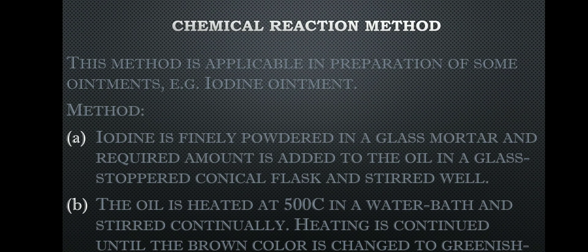Now the chemical reaction method, or chemical method. This is a special-case method applicable for certain ointments — for example, iodine ointment, which cannot be prepared without a chemical reaction. For iodine ointment: first, iodine is finely powdered in a glass mortar, then the required amount of iodine is taken with oil in a glass-stoppered conical flask and stirred well.